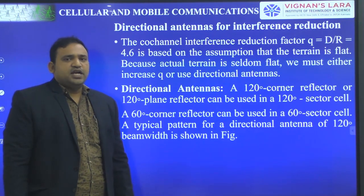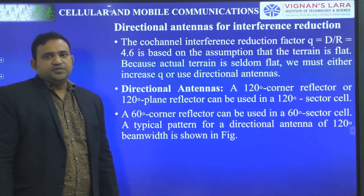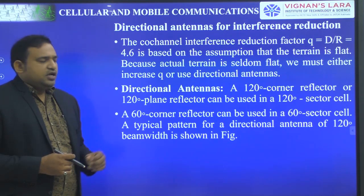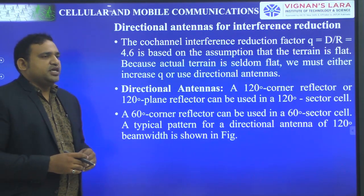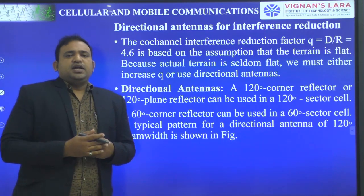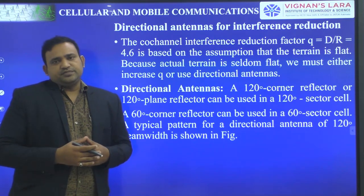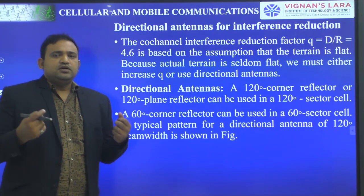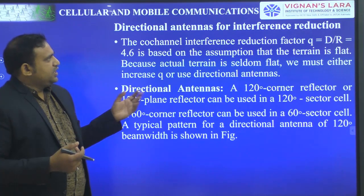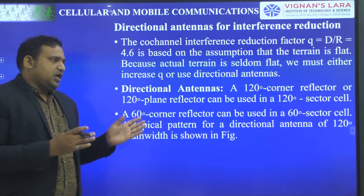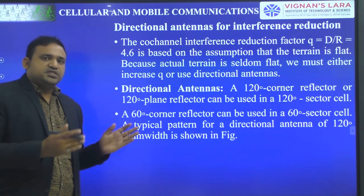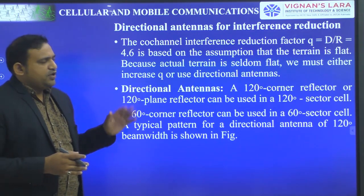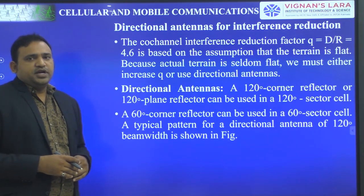Next, coming to directional antennas for interference reduction. While discussing Unit 1, it was clearly mentioned that while going to directional antennas for interference reduction, less number of cells are being interfered. Two cases were considered: one is the 3-sector case and the 6-sector case, to have a very good idea about interference reduction.